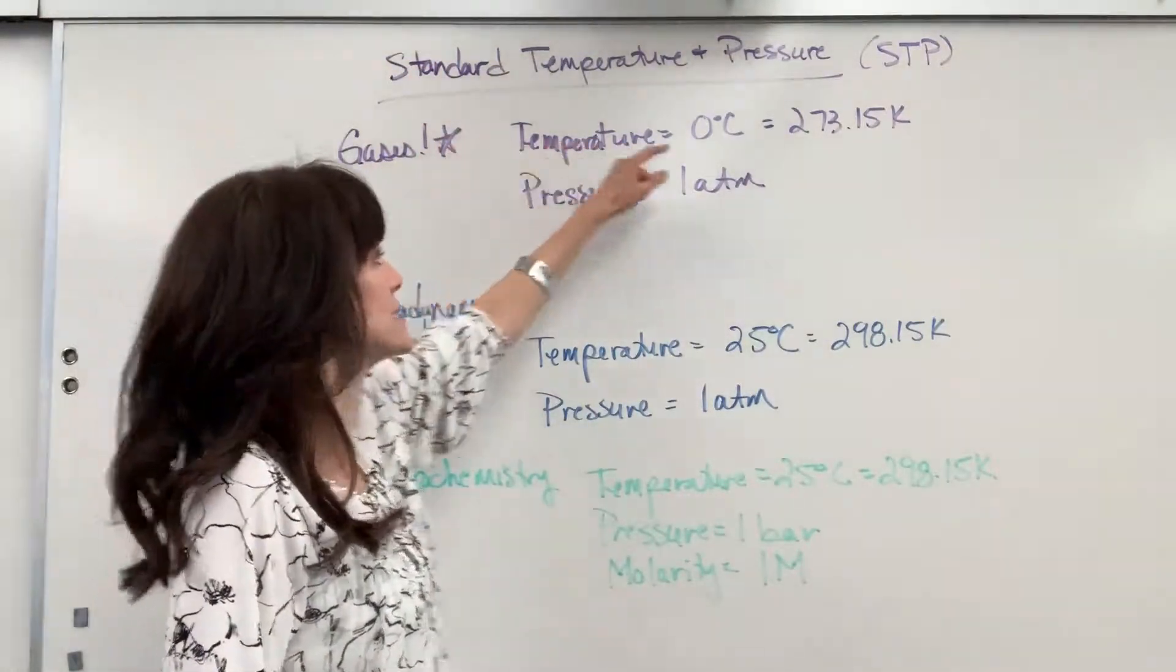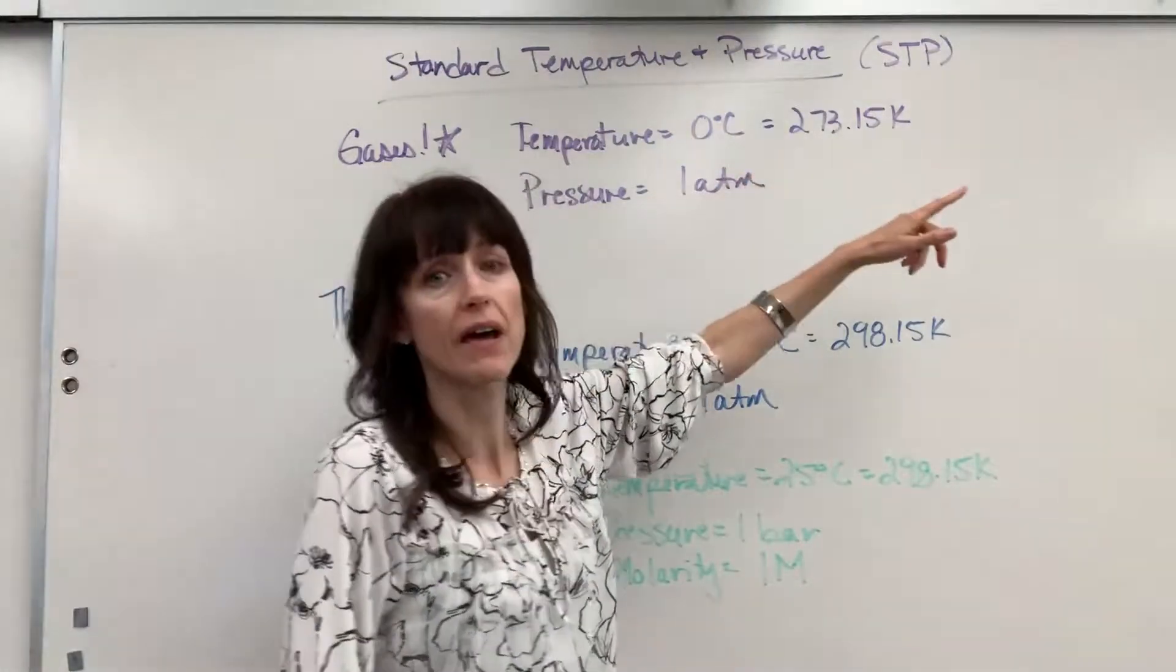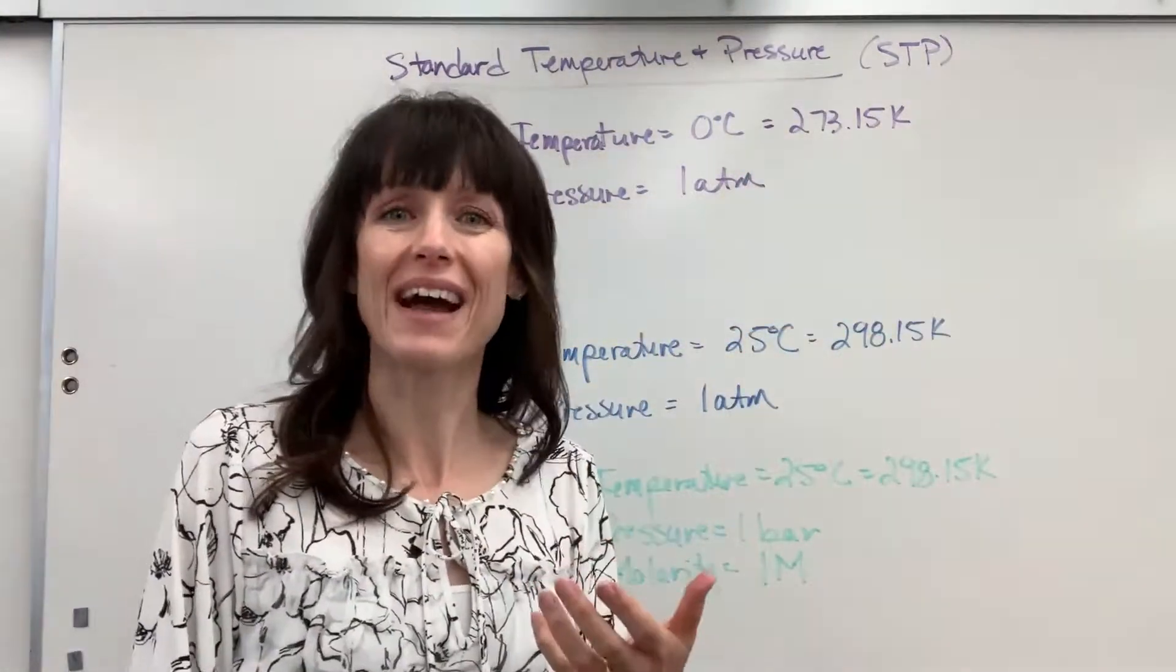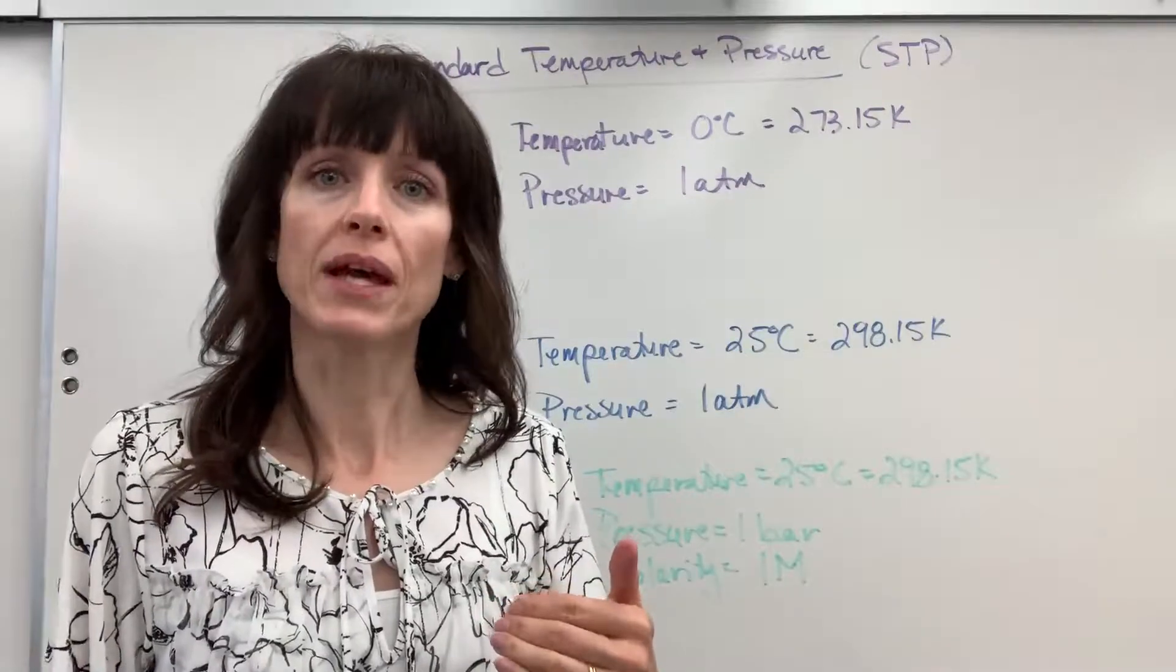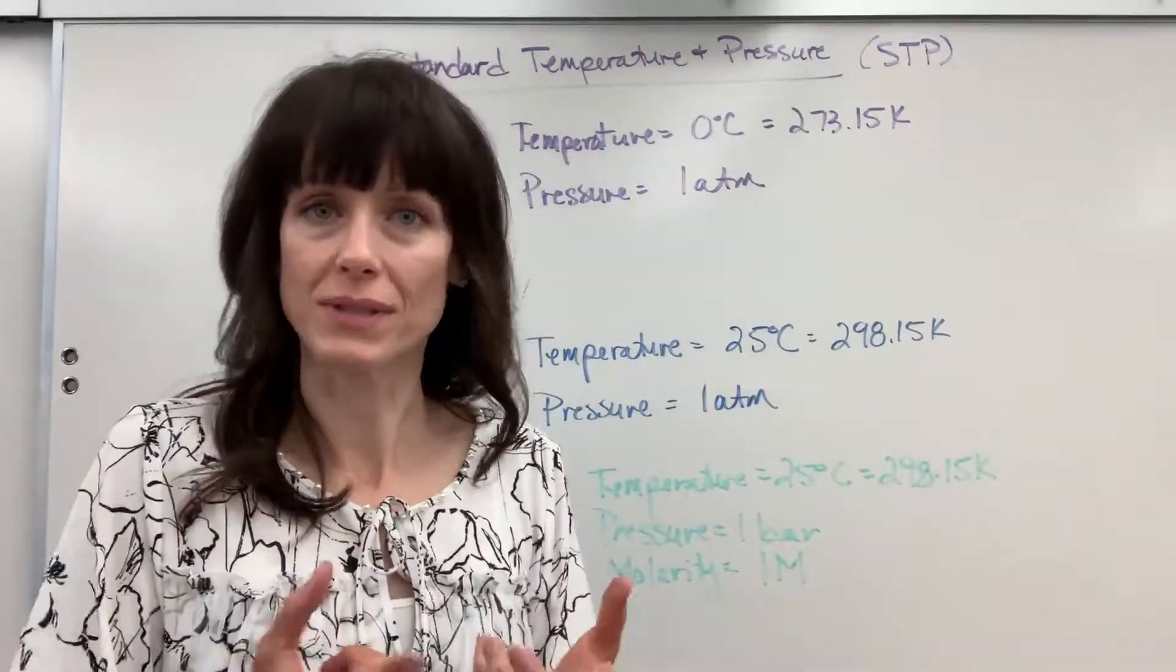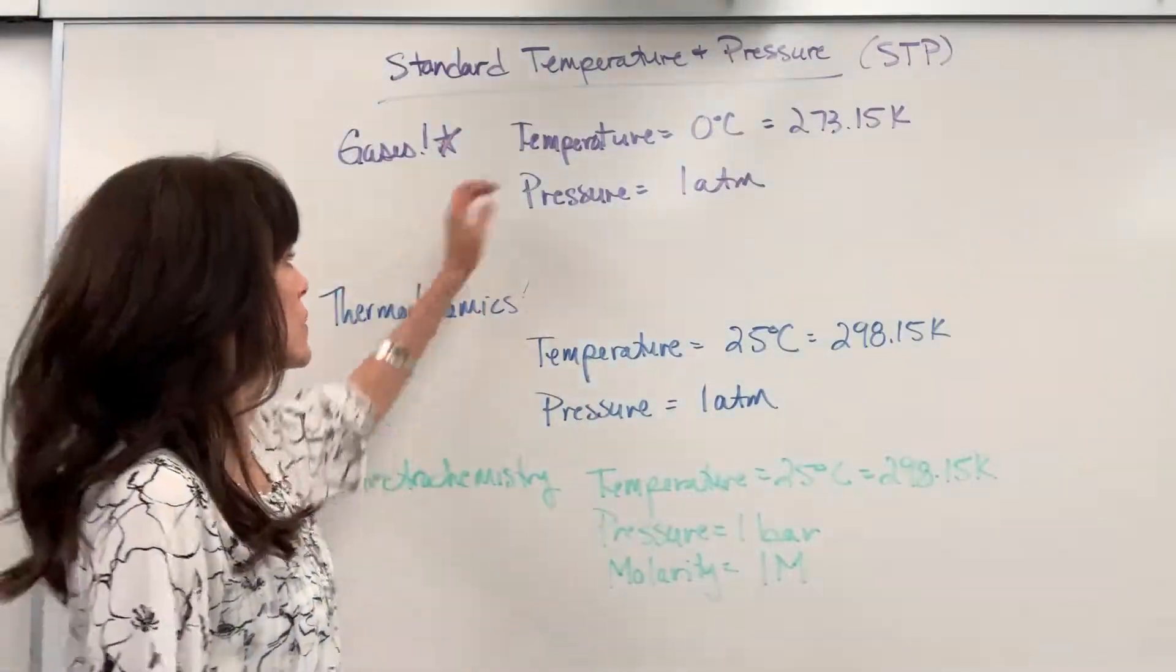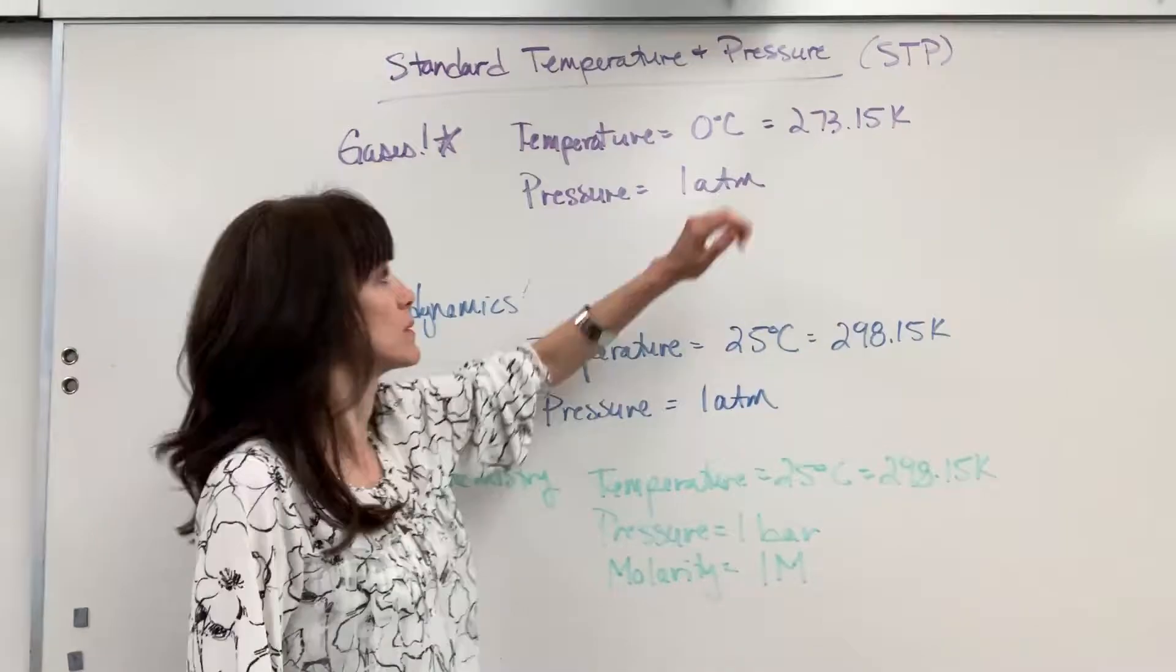Temperature for gases is zero degrees C, and that's unique. It's 273.15K. You can remember for gases that it has to be zero because we will never have a negative number when we're dealing with temperature and gases. It's based off of that absolute zero. So it has to be zero degrees C.